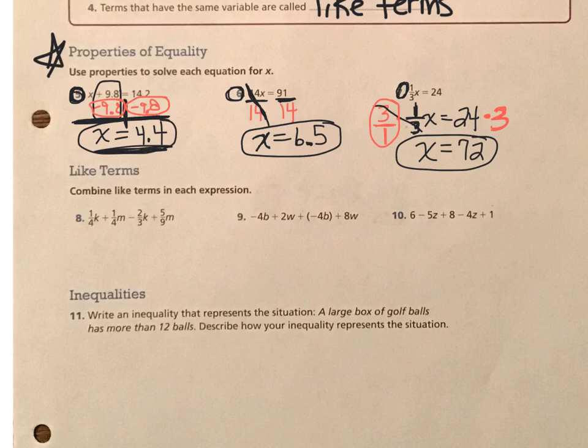So 3/1 times 1/3, in this case, gives us 1 whole. So those cancel each other out. And again, I'm left with just the x. And then on the right side of the equal sign, I've got 24 times 3, which is 72.